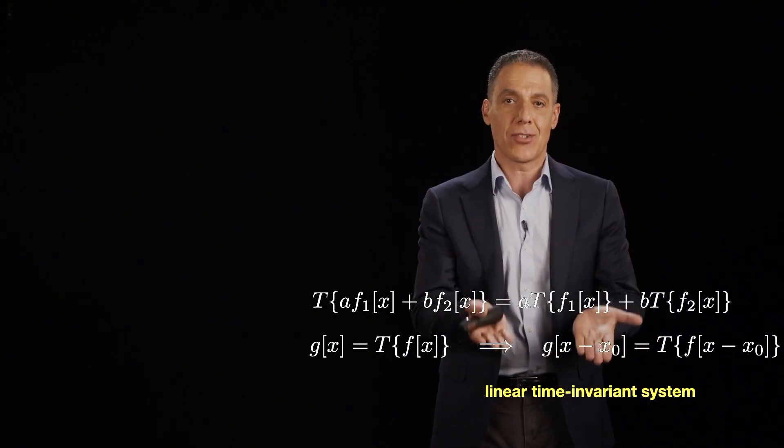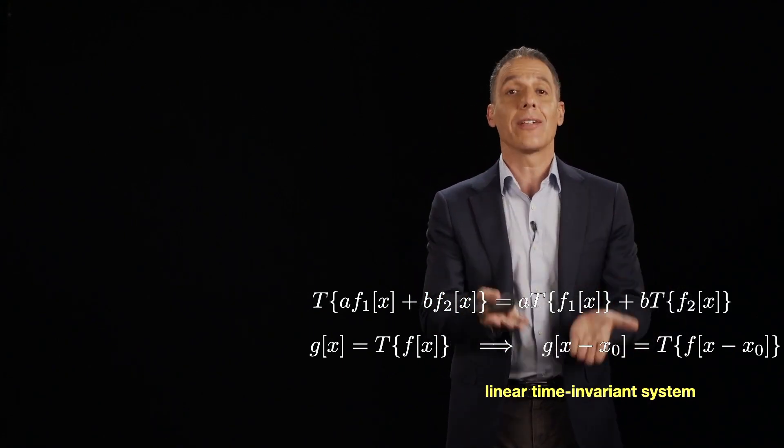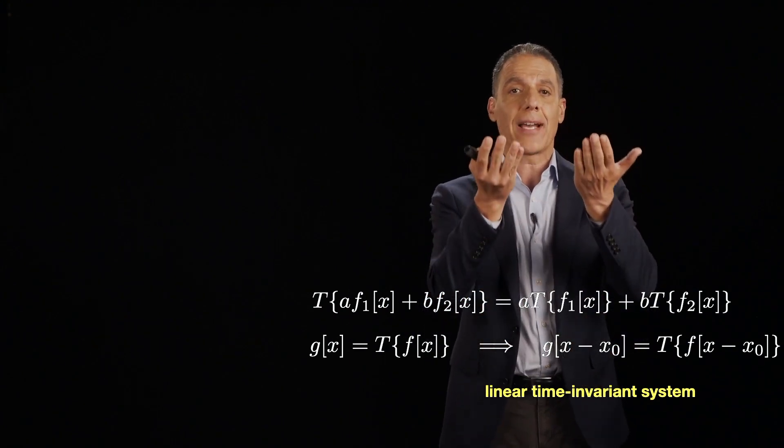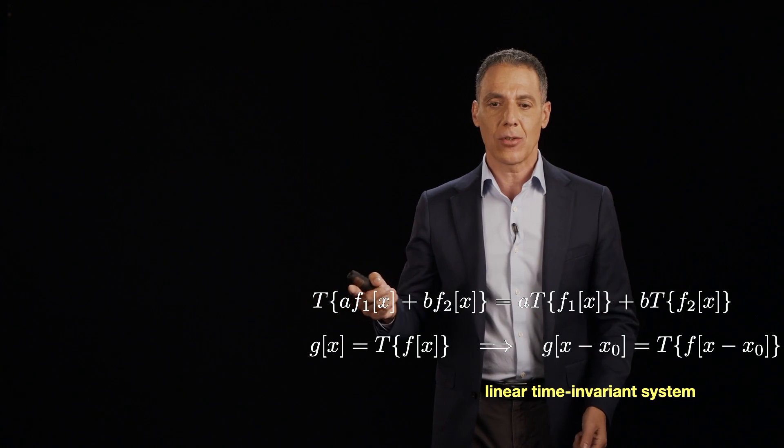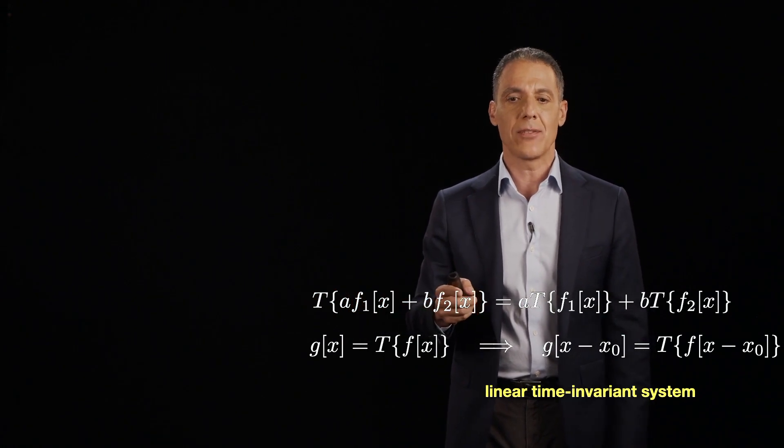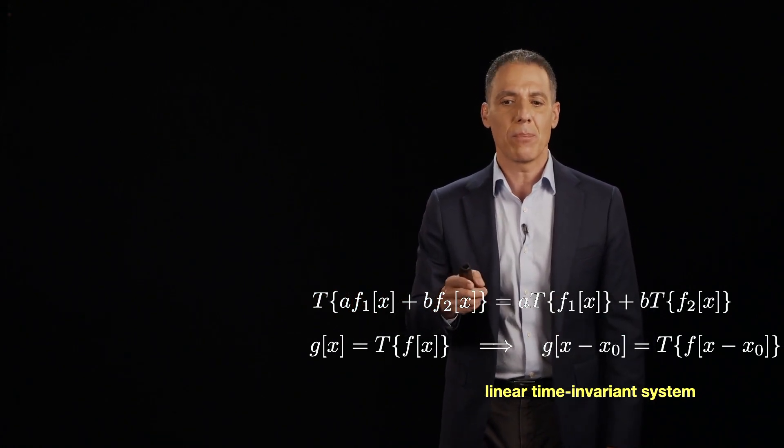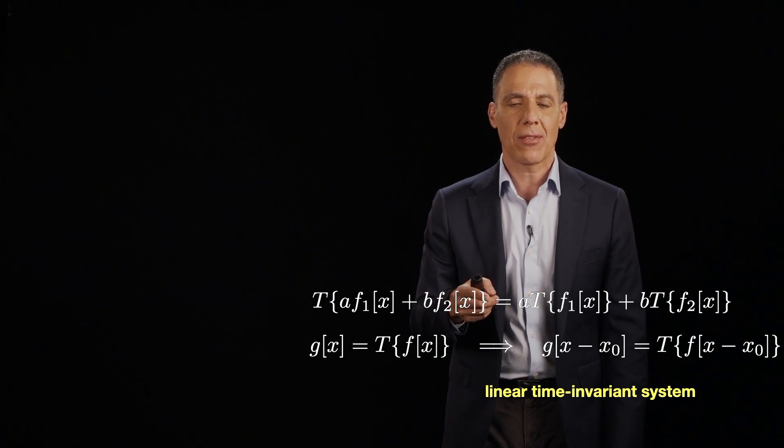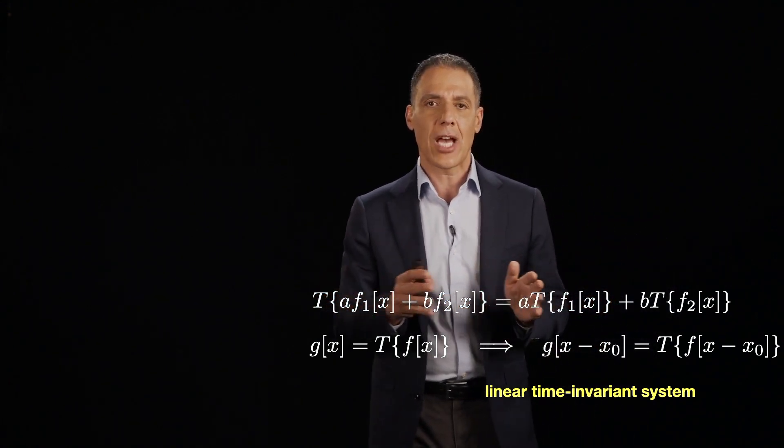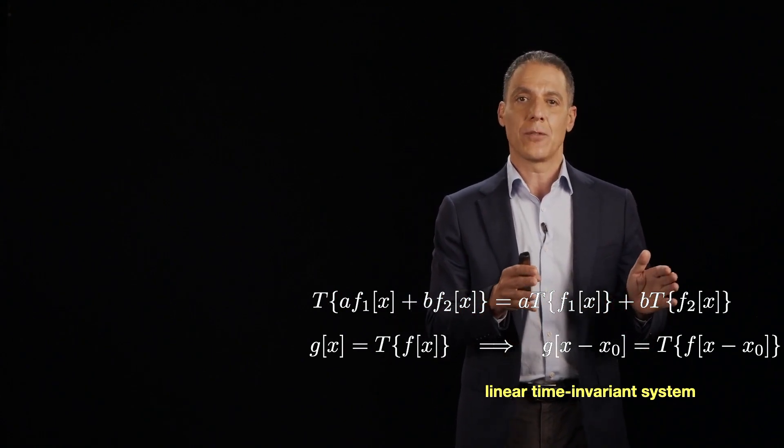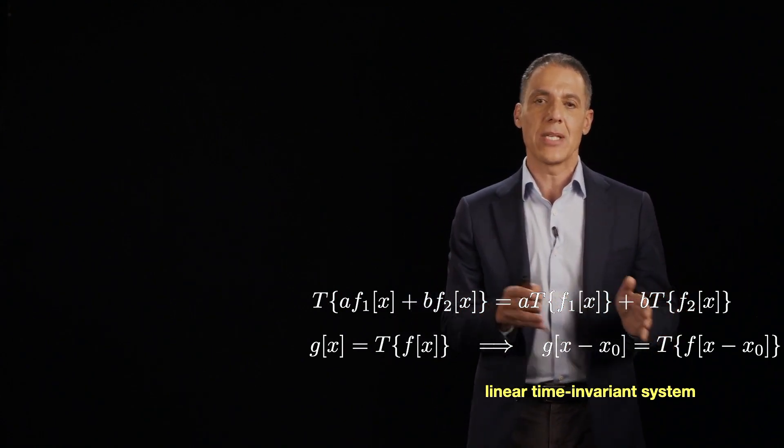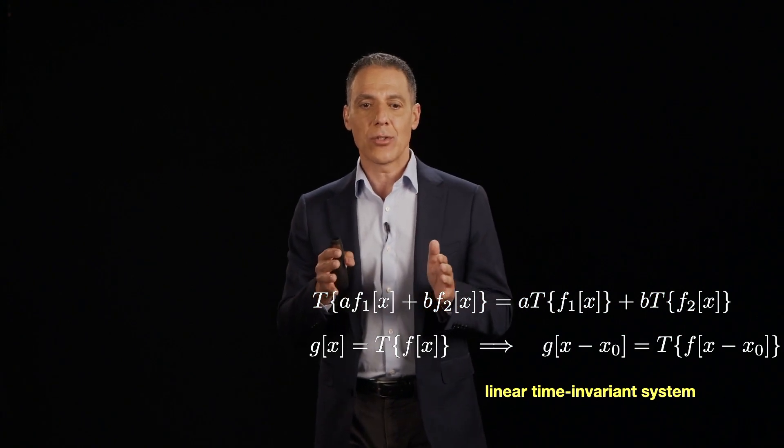It's a multiplicative factor. So I'm gonna multiply all the values by a in this signal, and I'm gonna multiply all the values by b in this signal. And then I'm gonna sum them up. Of course, assuming that they're both the same length. So what goes into this linear time invariant system is a sum, f_1 and f_2, of two scaled by a and b signals. And that goes into T.